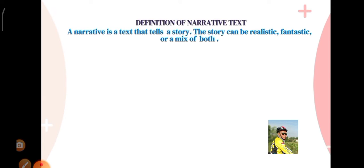What we have here is the definition of narrative text. A narrative is a text that tells a story. The story can be realistic, fantasy, or a mix of both.